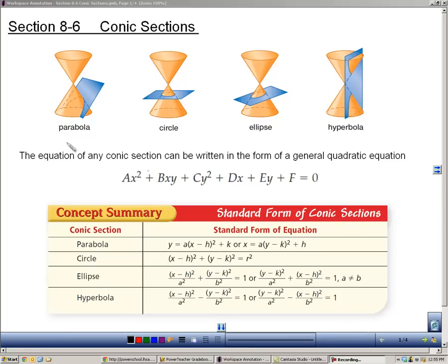Section 8.6 is about conic sections. If you remember the beginning of chapter 8, we had this picture up there, which shows you that if you have a double cone and you slice it with a plane, you can create these four shapes: a parabola, a circle, an ellipse, or a hyperbola. And we've spent the last four sections looking at each one of those individually.